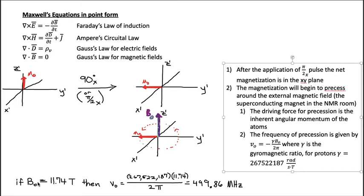I've given here an example. If you had a B0—this is a magnetic field—of 11.74 Tesla, what is the precession frequency for protons? I've given you the proton gamma, and you can just plug it all in here and you get 499.86 megahertz.